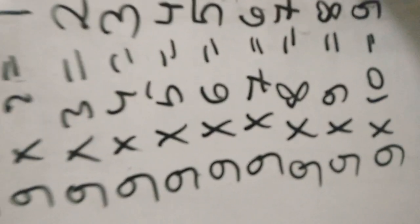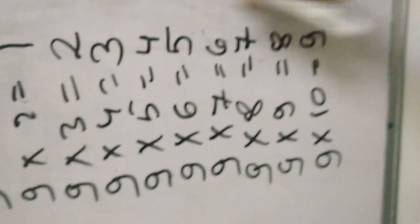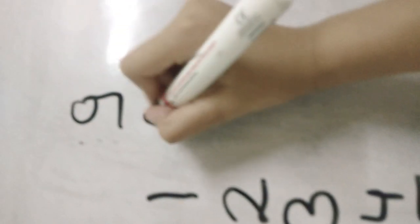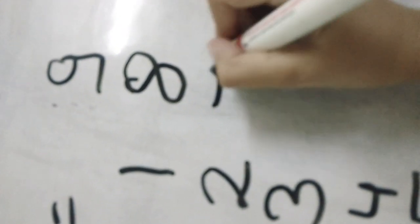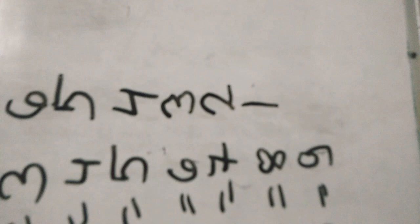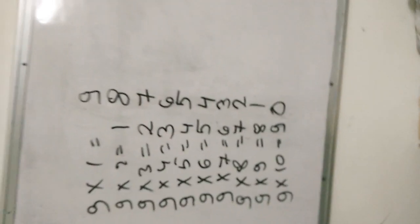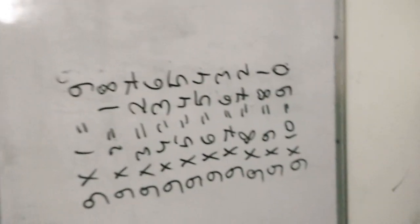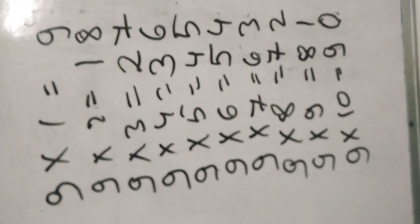Now I know that you all know the reverse of this. So we will write the reverse: nine, eight, seven, six, five, four, three, two, one, zero. Yes — so zero, we will write zero as well.